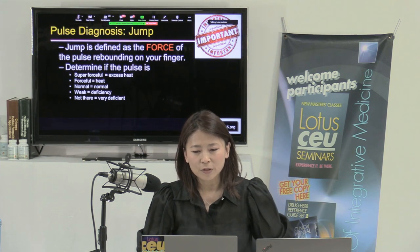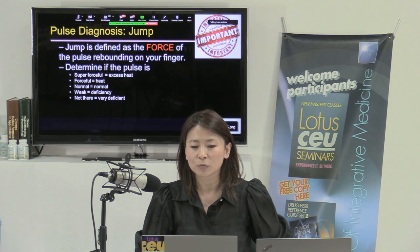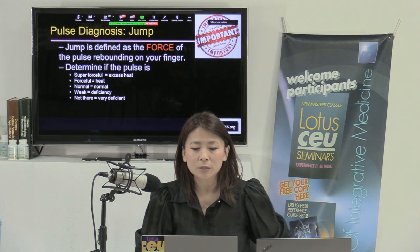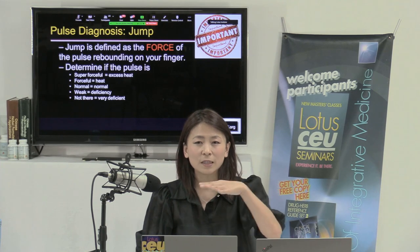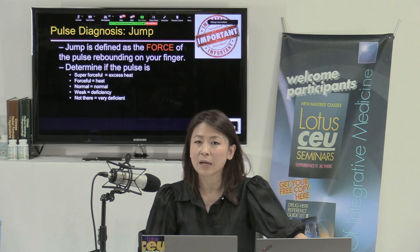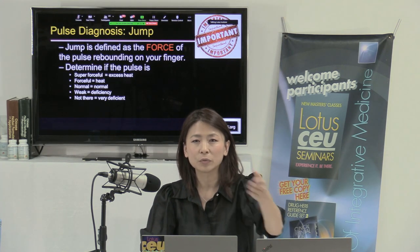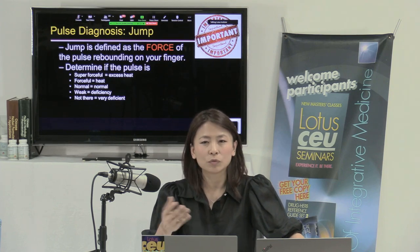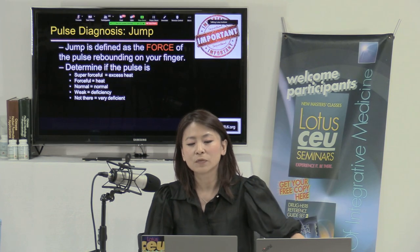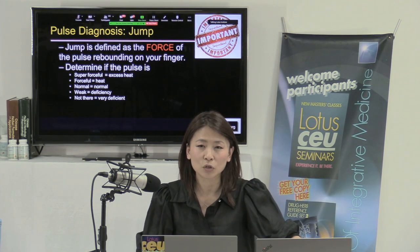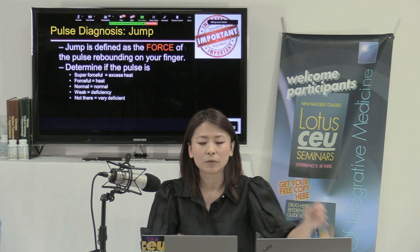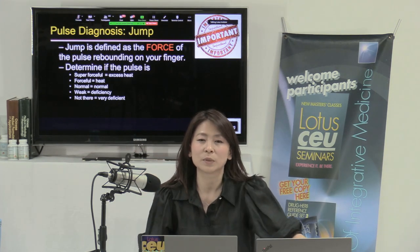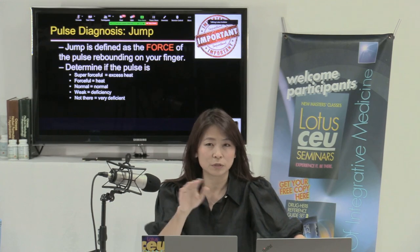The level is the depth at which the pulse is felt — superficial, mid, or deep. Every pulse has its own normal level; if it's not in that level, something is wrong. There are exceptions: the scatter pulse feels similar to a thin, weak, or deep pulse, but it actually indicates blood stasis rather than deficiency. That one is harder for beginners to distinguish. Look for other blood stasis signs — purplish lips, dark arm creases, purple tongue — to confirm.